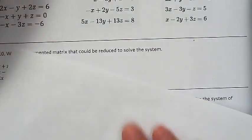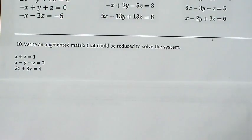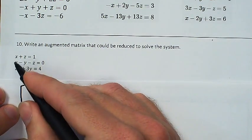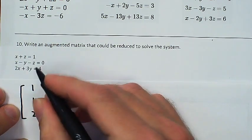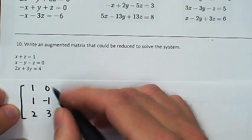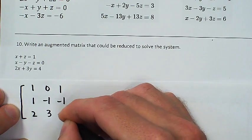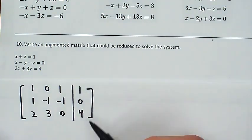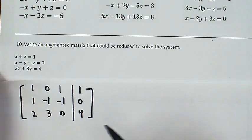Number ten — write an augmented matrix that could be reduced to solve the system. I copy in the coefficient matrix: 1, 1, 2; no y in row two so that's a 0, then −1, 3; and 1, −1, 0 since there's no z in the third equation; with constants 1, 0, 4. That's an augmented matrix that could be reduced to solve the system. They didn't ask us to solve it, and we just did nine of them, so that'll be good.